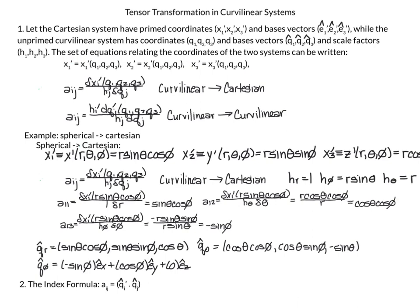The scale factors give us an indication of how much we're moving. This is what we discussed in differential geometry when defining things like our surface integral or curl in spherical or curved linear systems. We have a set of equations that relate coordinates of the two systems: x1 is a function of q1, q2, q3; x2 is a function of q1, q2, q3; and x3 is a function of q1, q2, q3. For example, in spherical coordinates, x1 — the x coordinate — is r sine theta cosine phi.